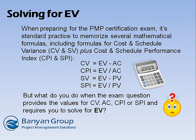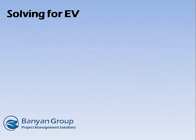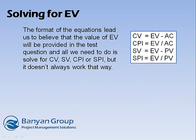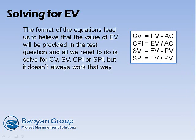But what do you do when the exam question provides the values for CV, AC, CPI, or SPI and requires you to solve for EV? The format of the equations leads us to believe that the value of EV will be provided in the test question, and all we need to do is solve for CV, SV, CPI, and SPI. But it doesn't always work that way.